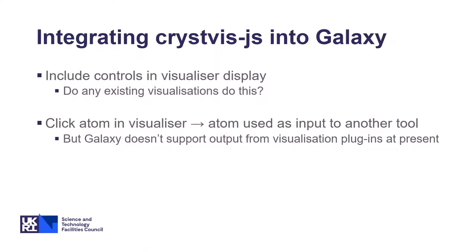We've tried to integrate this visualizer into Galaxy and run into a couple of issues. Firstly, how to include controls in the visualizer display — I haven't looked through all the existing visualizations, so if there are any that do this, please point me to them. The second problem, which seems to be bigger, is that we want an interaction where you can click an atom in the visualizer and then use that atom as input to another tool — basically be able to say, I want to center this tool on this atom. But Galaxy doesn't support output from visualization plugins at present, so there's a question of how to actually accomplish this. Do we add output to visualization plugins? Do we embed the visualizer in a tool instead? Do we create something completely custom? We're a bit stuck here, so if you have ideas, advice, or are doing something similar, please do get in touch.